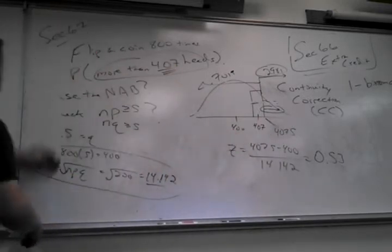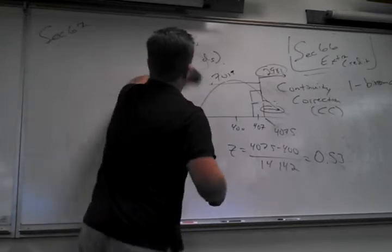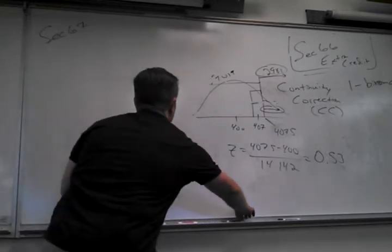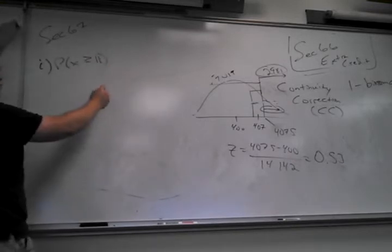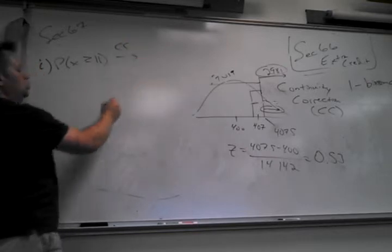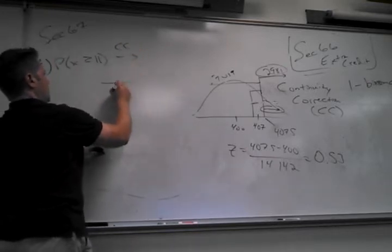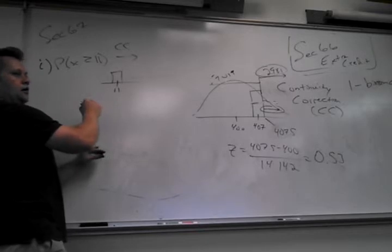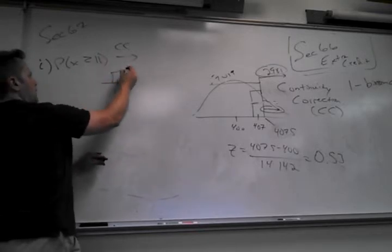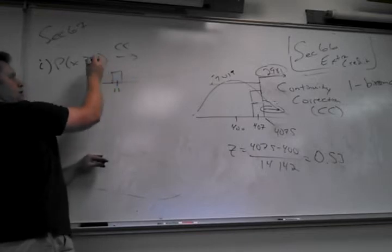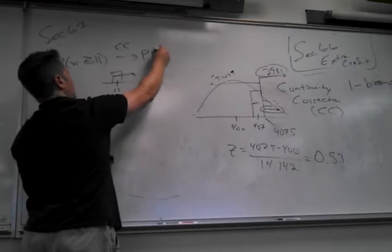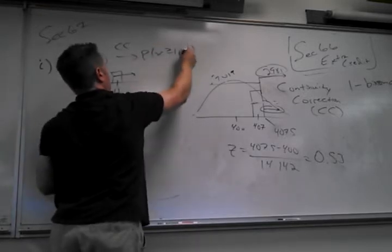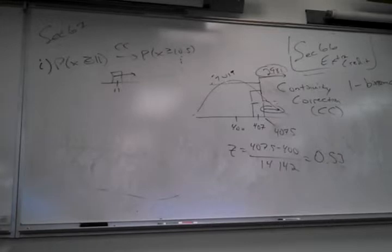So we have the Central Limit Theorem — continuous data, a normal z-score problem, taking a sample and asking about its mean, change the standard deviation. And then we have the NAB — a binomial situation where I want to use a normal curve. The correction I've got to make is the continuity correction.